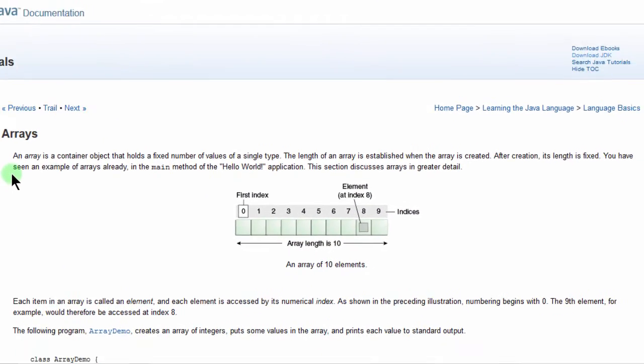It says an array is a container object that holds a fixed number of values of a single type. So in Java, this is true, a single type because Java is a strongly typed language. So it will only hold objects of a single type. If you declare an array to be of integers, it will only hold integers. You will not have any strings in that array.